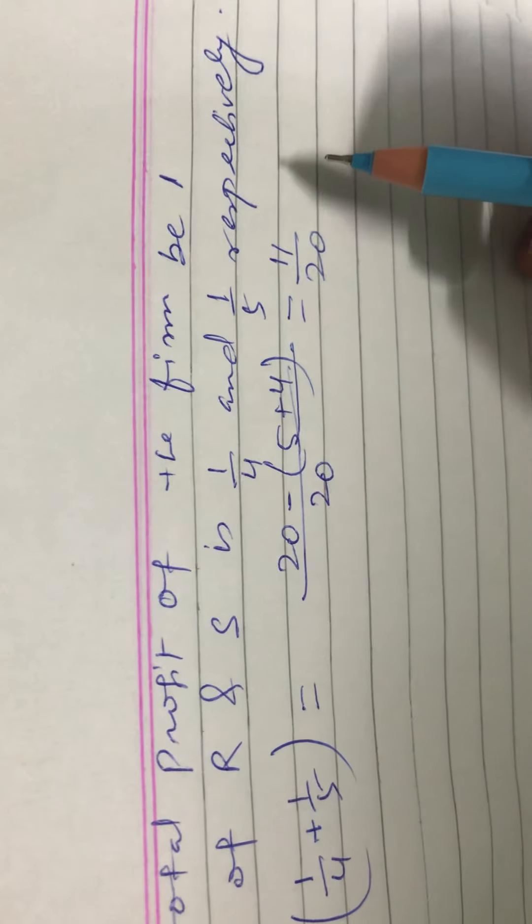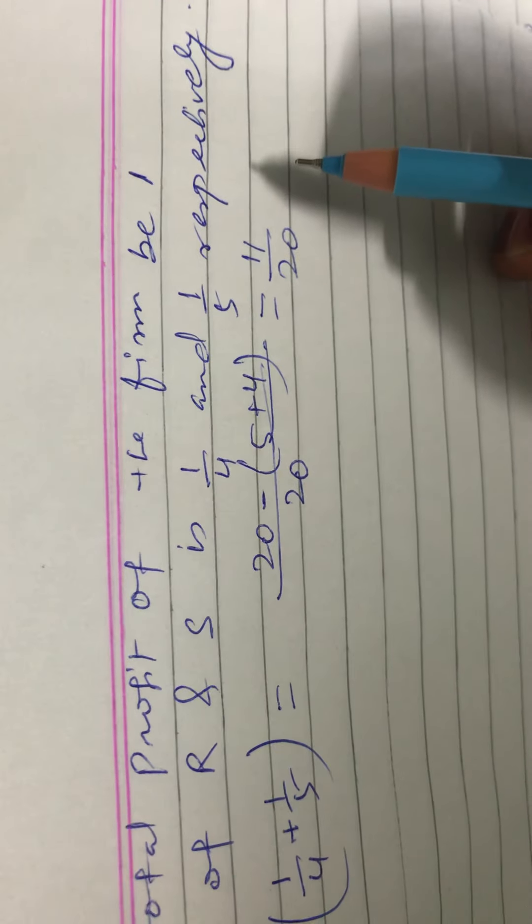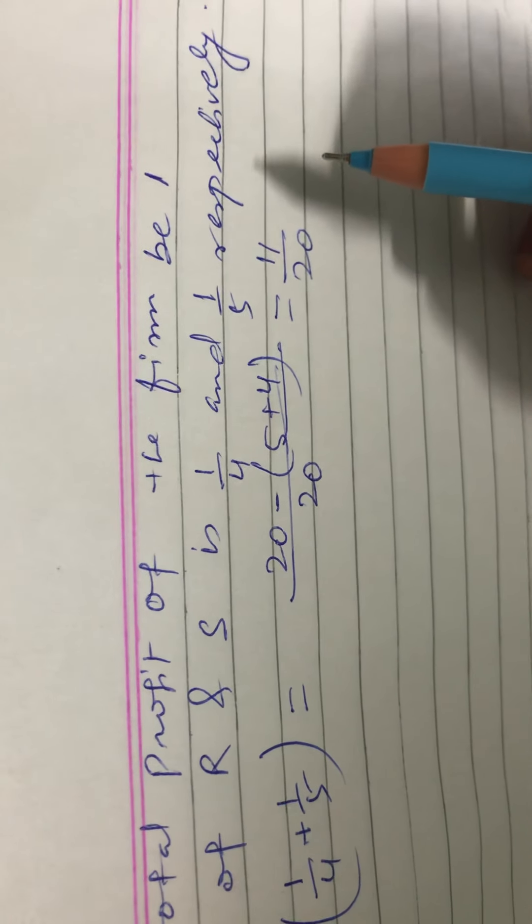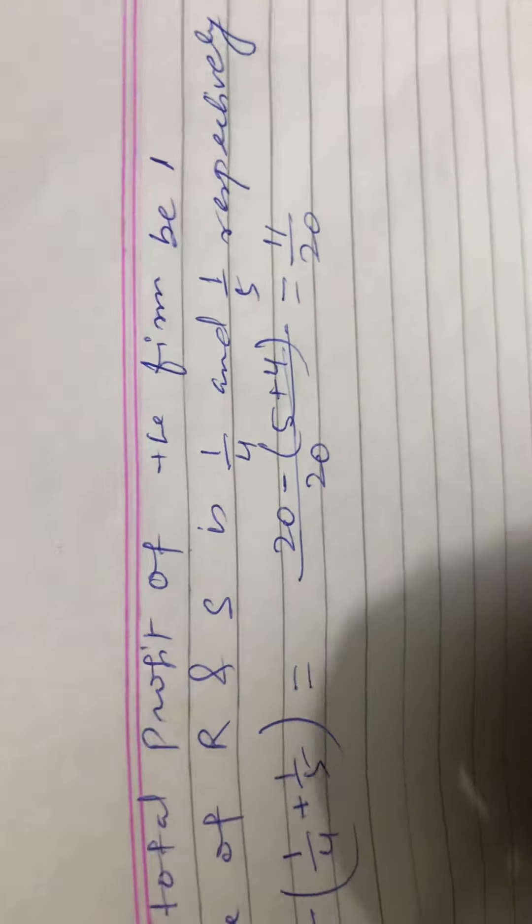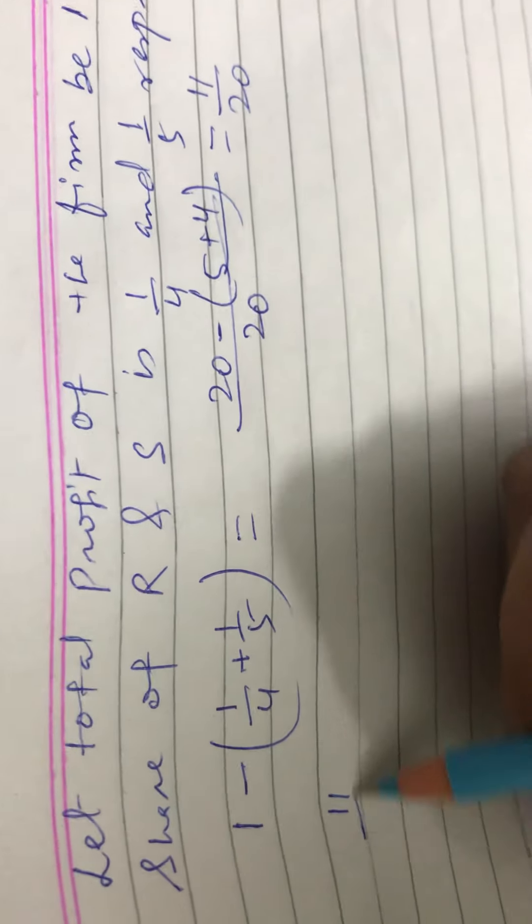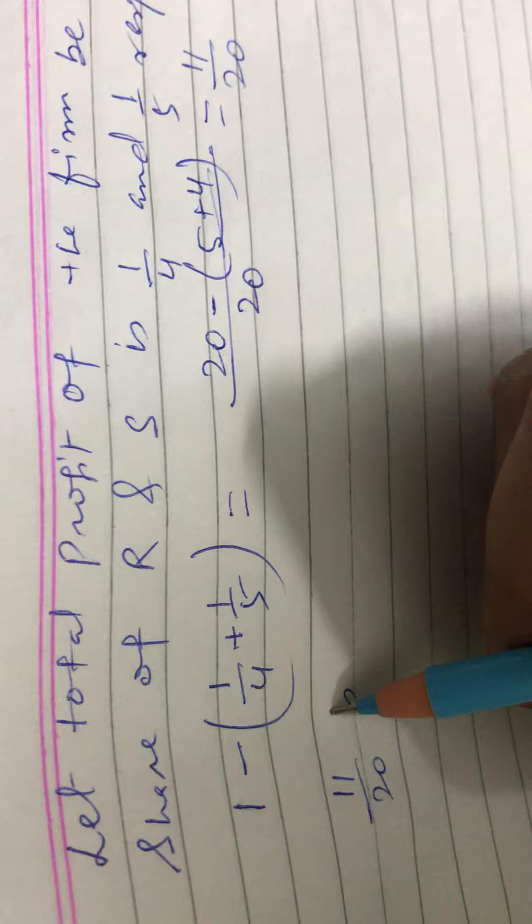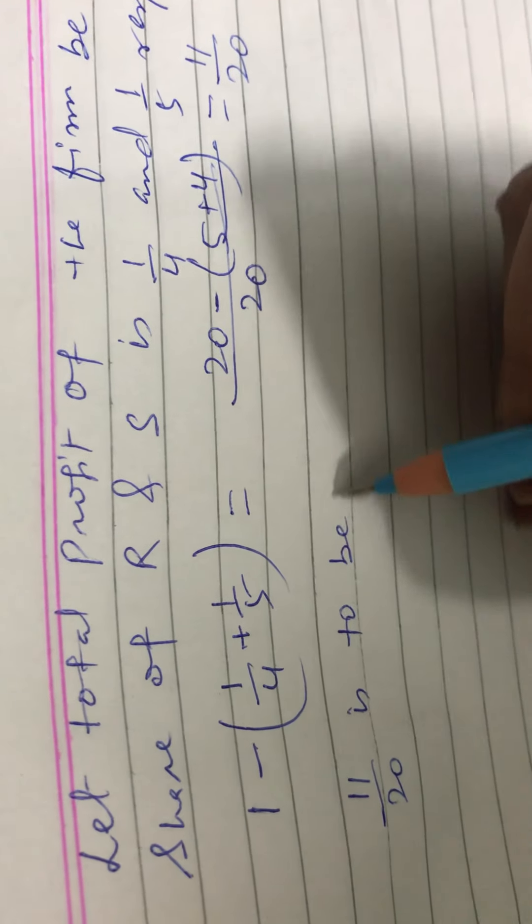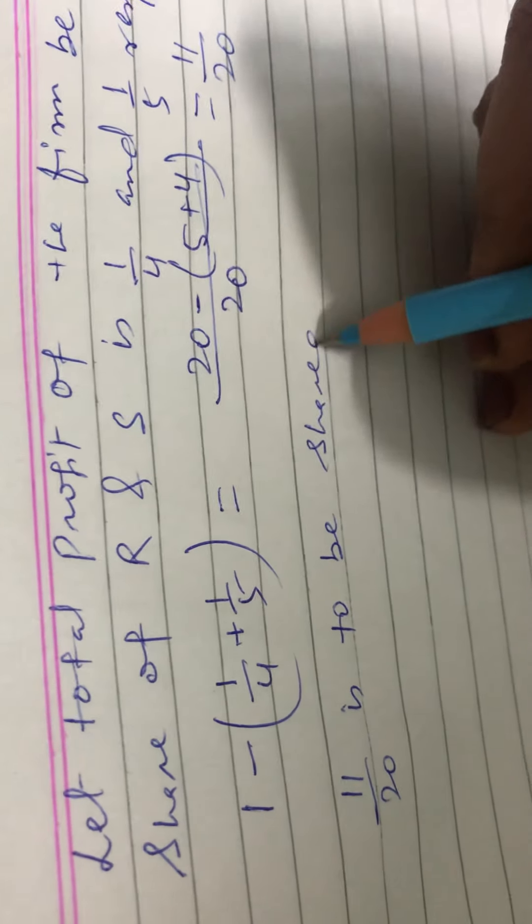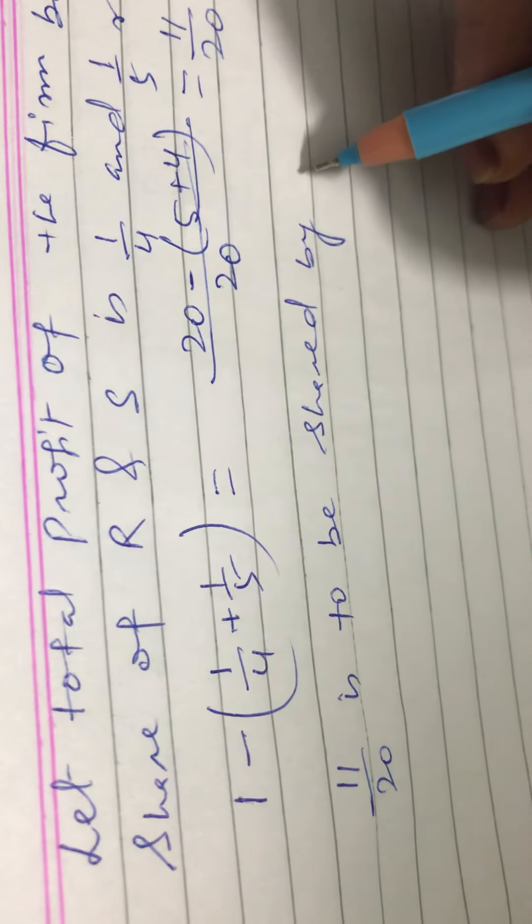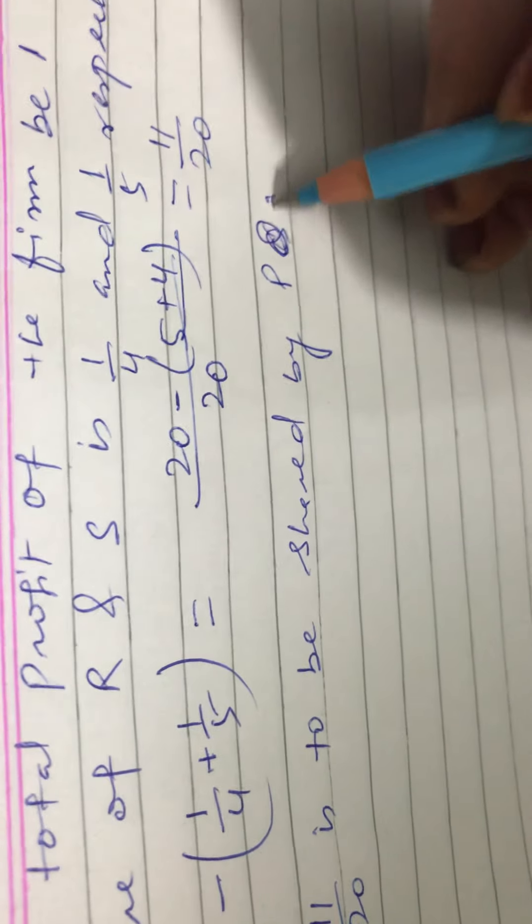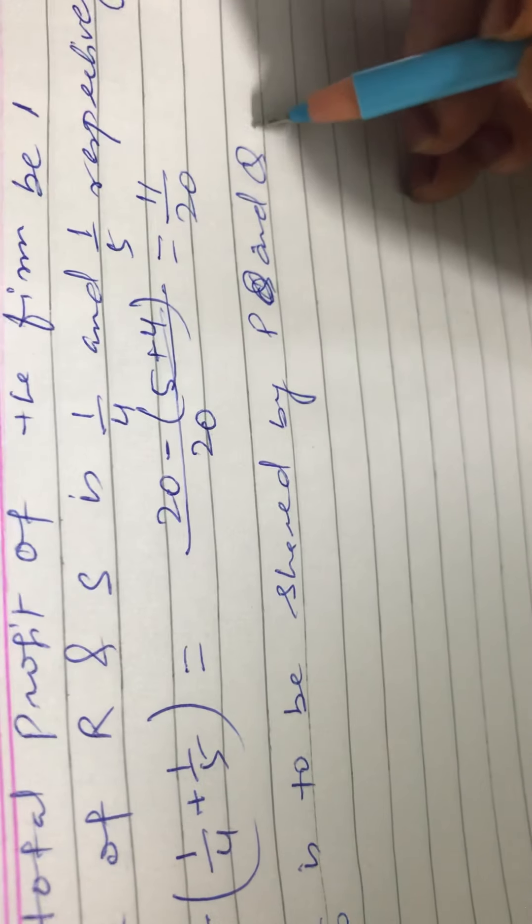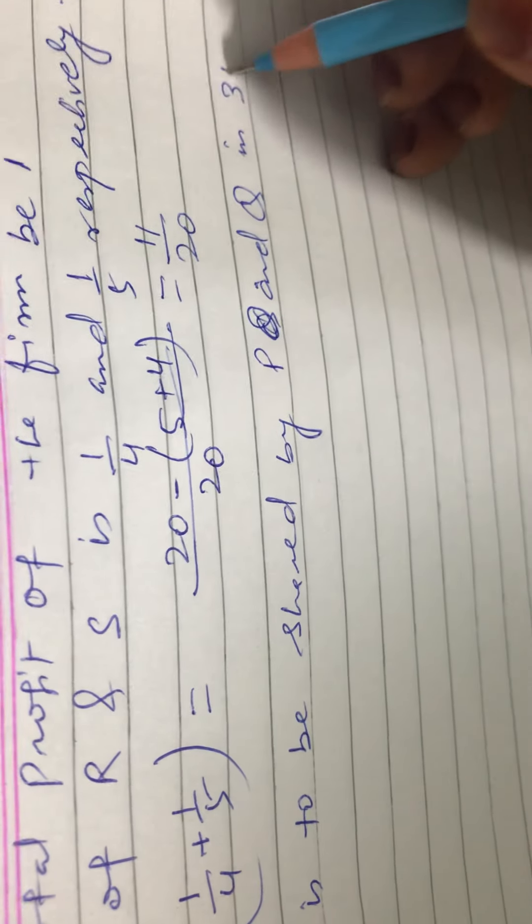So remaining share will be 11/20. This 11/20 we have to share. This 11/20 is to be shared by P and Q in the ratio of 3 is to 2. So 11/20 is to be shared by P and Q in 3 is to 2 ratio.